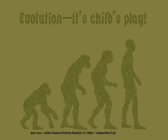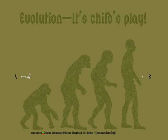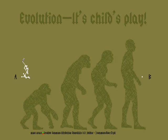Example 1: No natural selection. This is a strawman fallacy — how creationists like to describe evolution. As you may expect, random mutations take us nowhere.